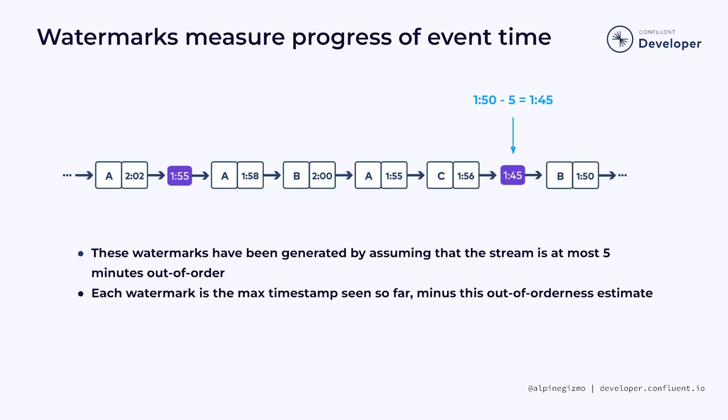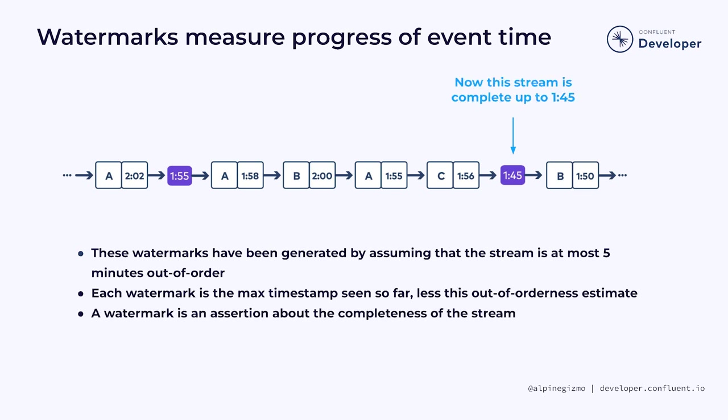These timestamps are computed by subtracting the out-of-orderness estimate from the largest timestamp seen so far. So in the case of the watermark at 1:45, this was computed by taking the timestamp of the previously processed event with the largest timestamp, which is at 1:50, and subtracting 5 minutes from that. This watermark tells us something about the completeness of the stream with respect to time — specifically, it is an assertion that the stream is now complete up to, but not including, 1:45, and no earlier events are expected to follow. Earlier events are still possible, but they are not expected.